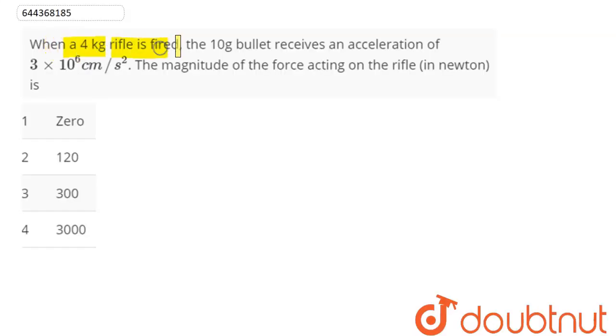The question is: When a 4 kg rifle is fired, the 10 gram bullet receives an acceleration of 3 × 10^6 cm/s². What is the magnitude of the force acting on the rifle in Newtons?